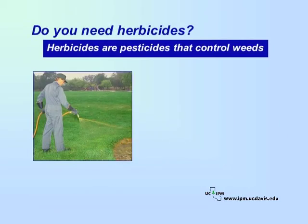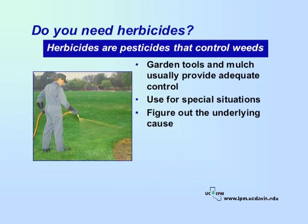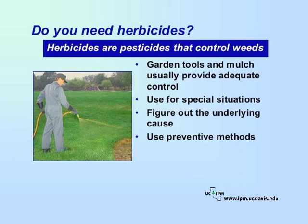Herbicides are pesticides that are designed to control weeds. A well-designed and well-maintained landscape generally does not require herbicides; using garden tools and mulch usually provide adequate control. Use herbicides for special problem situations, such as infestations of difficult-to-control perennial weeds, before establishing new plantings, or in turf grass. Don't rely on them exclusively. Before doing anything, figure out what your underlying problem is — for example, if you have crabgrass, you may be overwatering or have leaky sprinklers. Determine what is causing the problem and correct it. Once you have fixed the underlying problem, use preventive methods such as mulch, competitive plantings, or cultivation, that may make future herbicide use unnecessary.